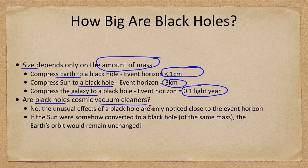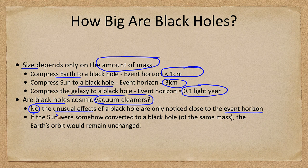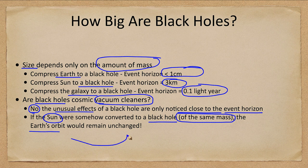Are black holes cosmic vacuum cleaners? This is a common misconception — that black holes just suck in anything around them — and that's really not true. The unusual effects of a black hole are only noticed when you get close to the event horizon. If we could somehow compress the sun to a black hole of exactly the same mass, the Earth's orbit would remain completely unchanged. Yes, it would get cold and very dark, but overall the Earth would continue to orbit the black hole exactly as it orbits the sun.